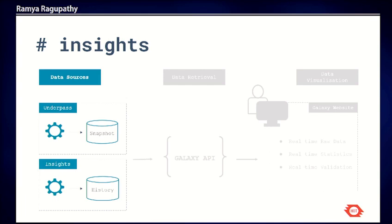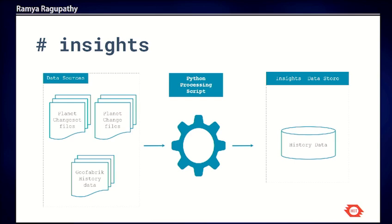The other data source built as part of Galaxy is Insights. Unlike Underpass, which is focused on the snapshot, Insights captures the entire history of the OSM database. All features on OpenStreetMap have history attached — what you see on the map is the most recent version, but internally the database has multiple versions of the same feature. For example, adding a building creates version 1, and someone adding a name or address creates version 2. Insights captures the history of all features — all buildings, highways, and amenities available on OSM.